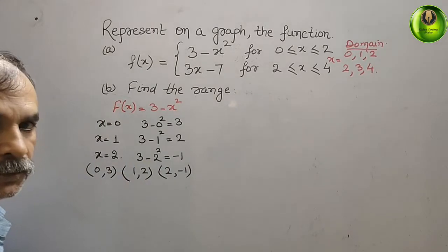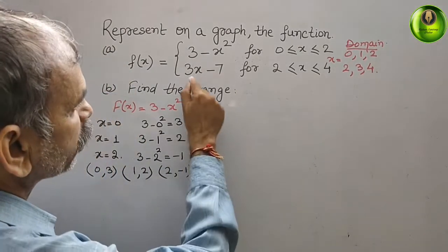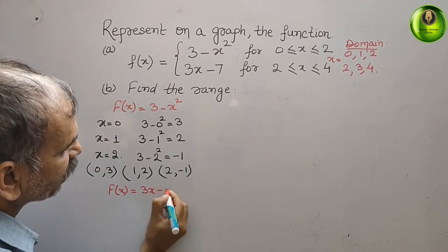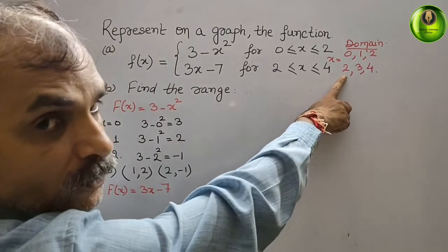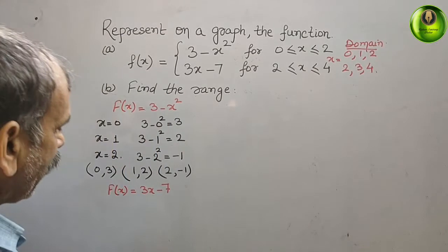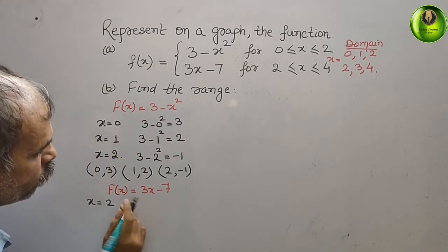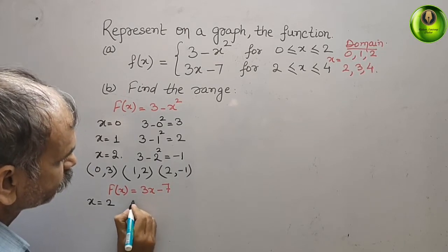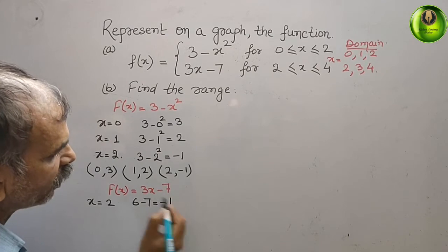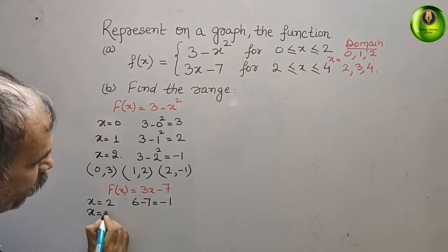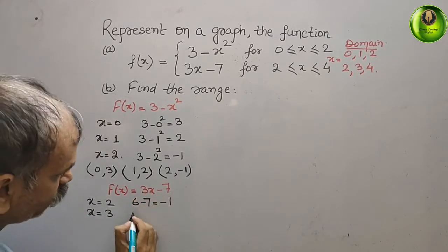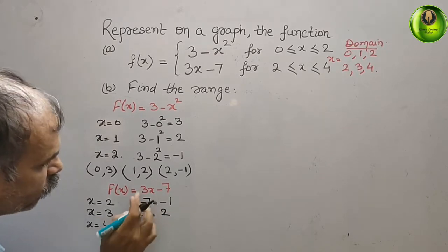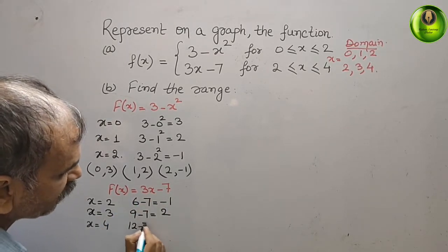Now we go for f(x) = 3x minus 7. Substitute the second set of values — x = 2, 3, and 4. For x = 2: 3 times 2 is 6, and 6 minus 7 equals minus 1. For x = 3: 3 times 3 is 9, and 9 minus 7 equals 2. For x = 4: 3 times 4 is 12, and 12 minus 7 equals 5.